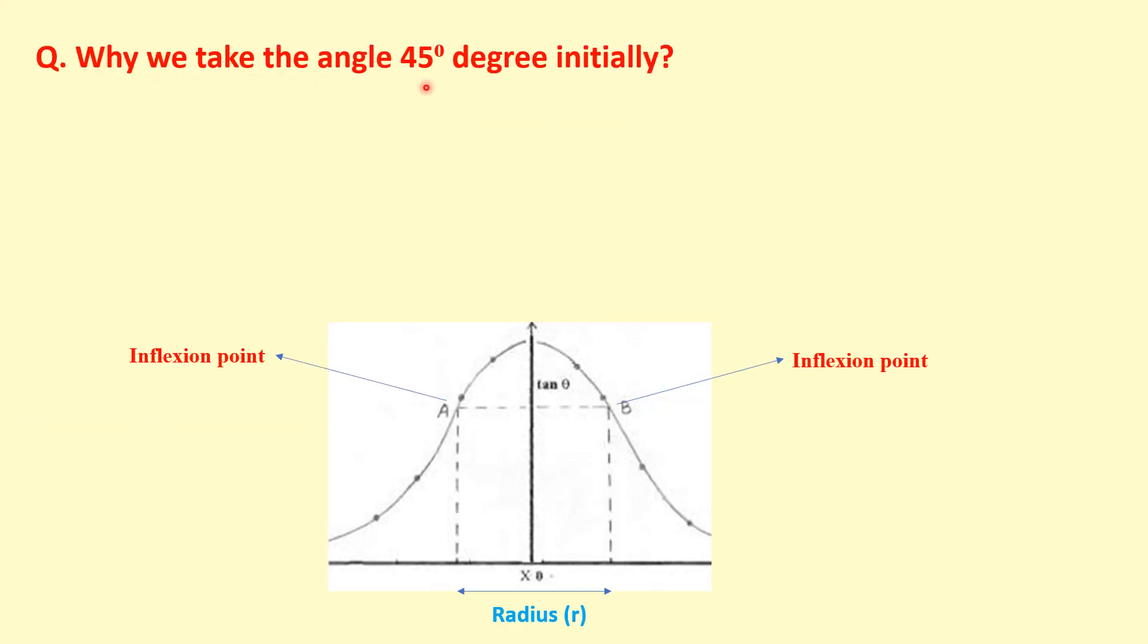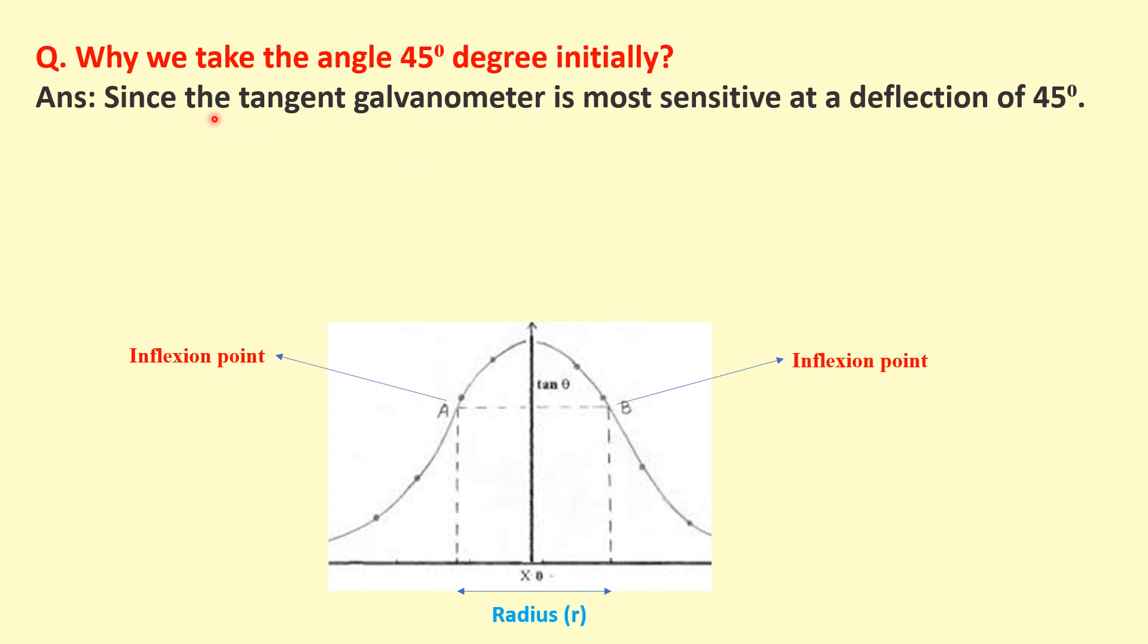Why do we take the angle 45 degrees initially? Because the tangent galvanometer is most sensitive at a deflection of 45 degrees.